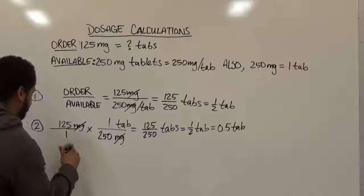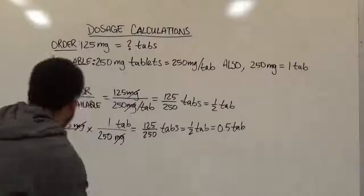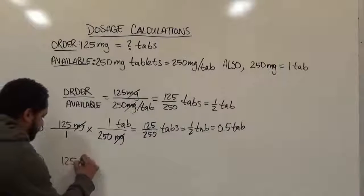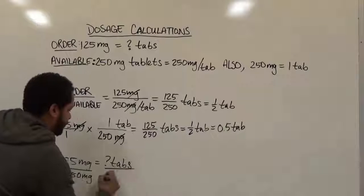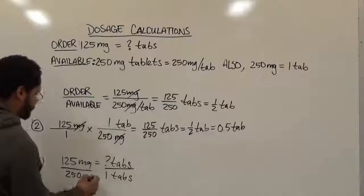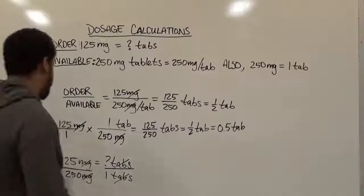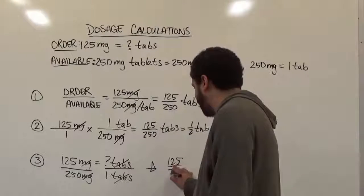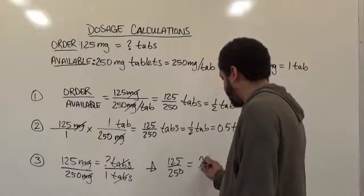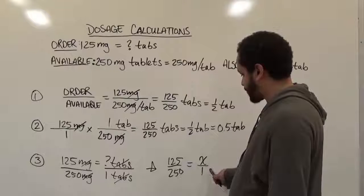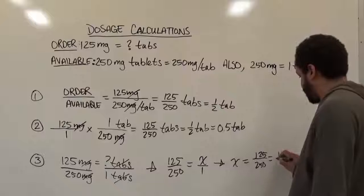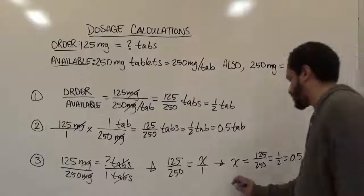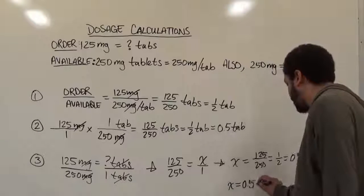We set these up as direct proportions with milligrams over milligrams and tabs over tabs. We'll have 125 mg equivalent to how many tabs, divided by 250 mg over one tab. The units cancel, and we have 125 over 250 equals x over 1. Since we have x over 1, this translates directly to x equals 125 over 250, which is 1 over 2, or 0.5. This x represents the number of tabs — so our solution is half a tab.